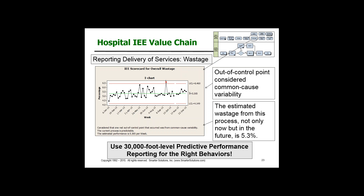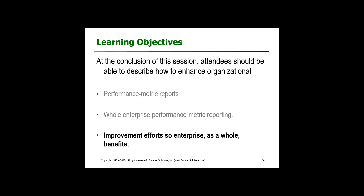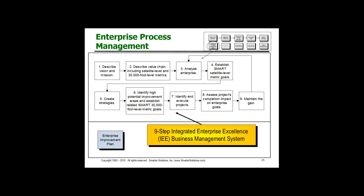Now if we don't like that answer, we've got to do something different to the process. We don't want people asking why one particular value is high and another is low — that can lead to a lot of firefighting. So again, I'm suggesting 30,000-foot-level performance reporting for the right behaviors.